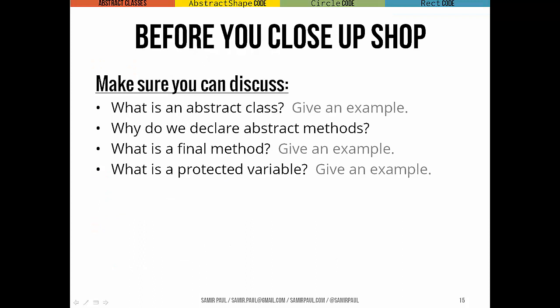Big takeaways here. What's an abstract class? Give me an example. Why do we declare abstract methods? What's the situation in which we might do that? What is a final method, and what does the keyword final do if we declare a method to be final? And what's a protected variable? That's just a review right there. That's it for today and abstract classes.